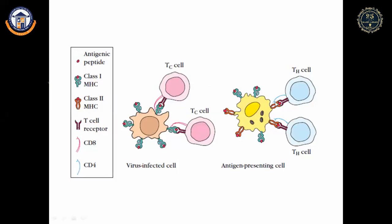MHC class I molecules interact only with cytotoxic T cells (Tc), and MHC class II molecules interact only with helper T cells (Th). This shows the virus-infected cell, which is a class I presenting cell, and the antigen-presenting cell, which expresses both MHC class I and class II molecules.